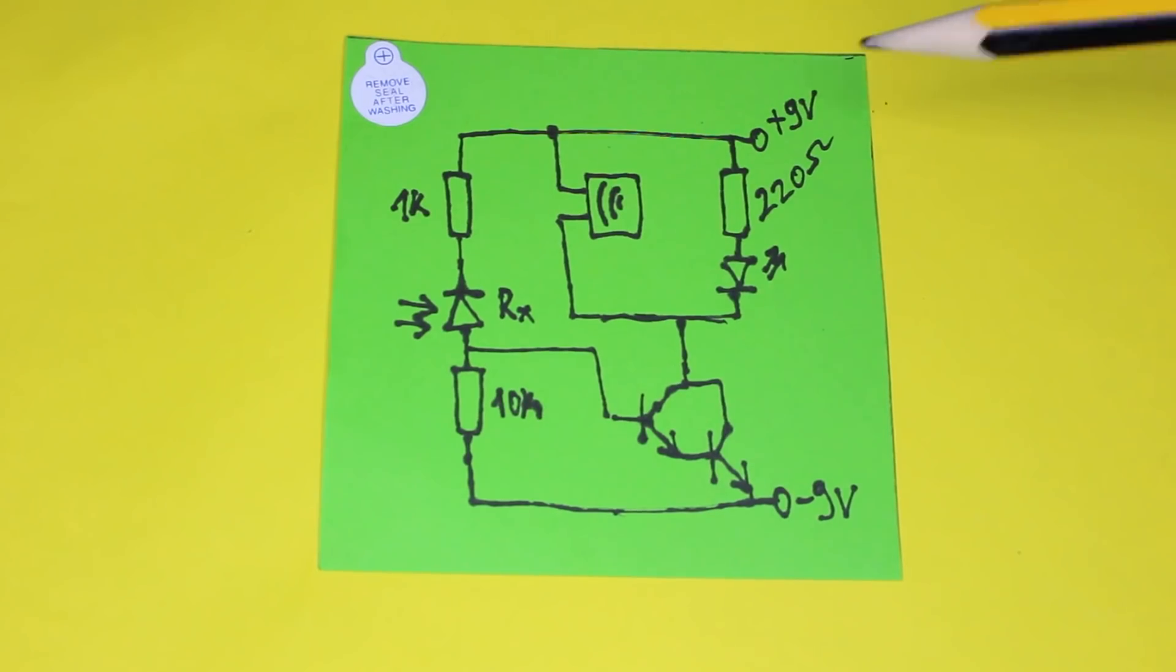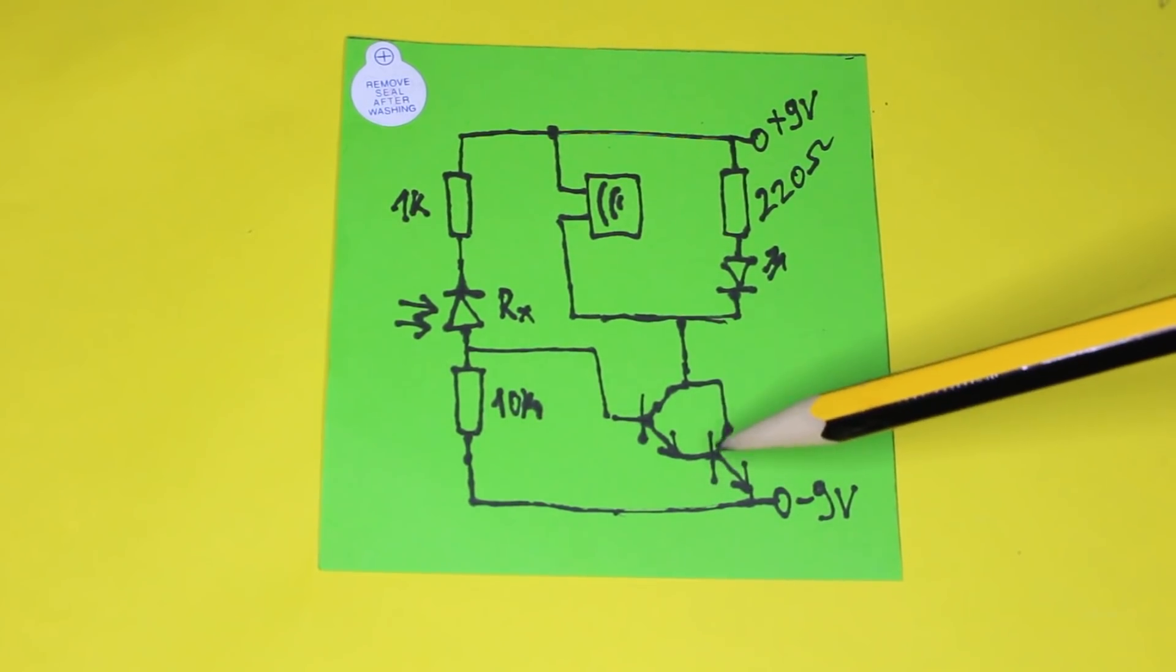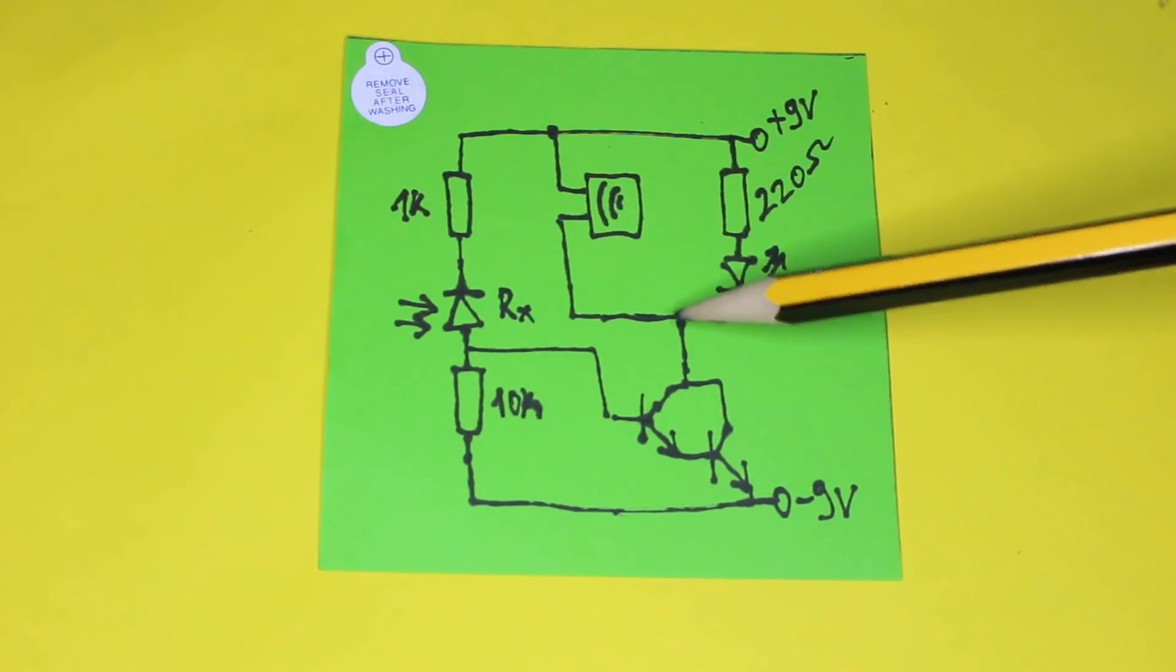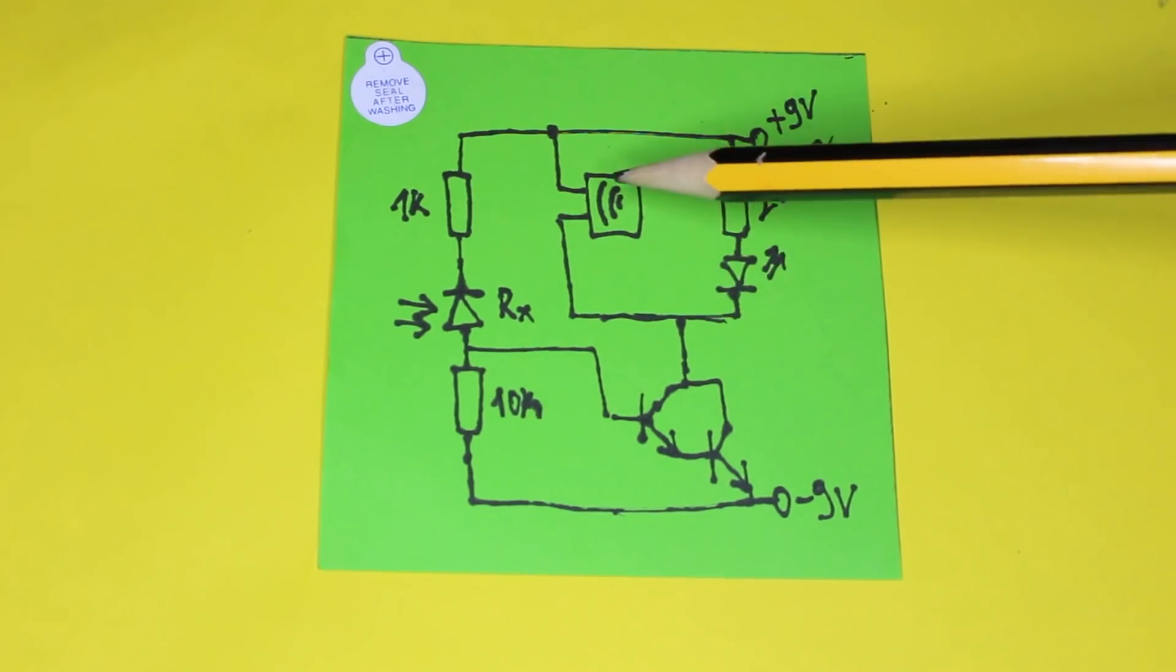As you can see on the schematic, with the NPN transistor I am making a Darlington transistor, and from the collector side are connected the LED and buzzer.